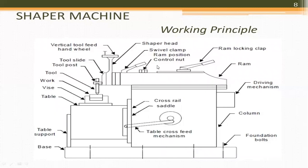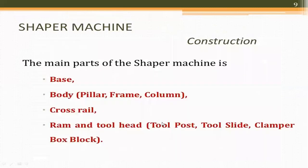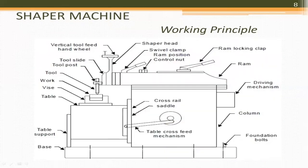The Shaper machine components include: base, column, cross slide, saddle, table support, table, vice, tool post, tool slide, vertical tool feed hand wheel, shape overhead, swell cam, RAM position control nut, RAM lock clamp, RAM driving mechanism, column, and foundation bolts.